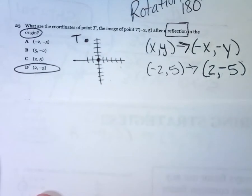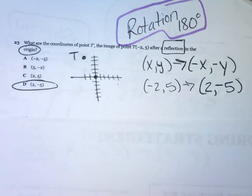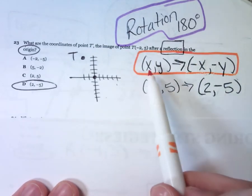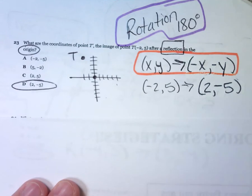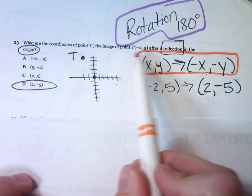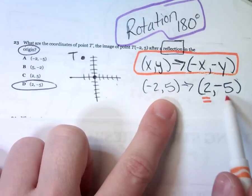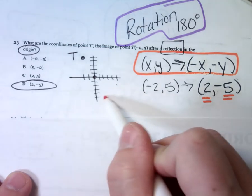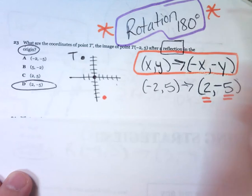Number 23. When it talks about a reflection in the origin, that really is a rotation of 180 degrees. It doesn't matter if you go 180 counterclockwise or clockwise — you get to the same point. The rule for a 180 degree rotation says your original ordered pair x, y becomes the opposite of x, the opposite of y. I took the point negative 2, 5, and the opposite of negative 2 is positive 2, and the opposite of 5 is negative 5. So a reflection in the origin is the same as a rotation of 180 degrees.